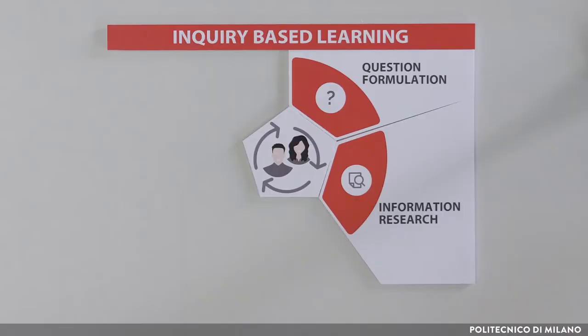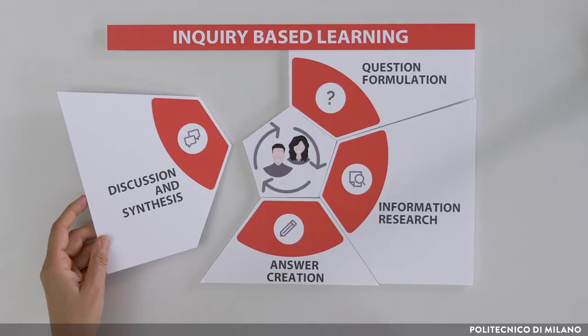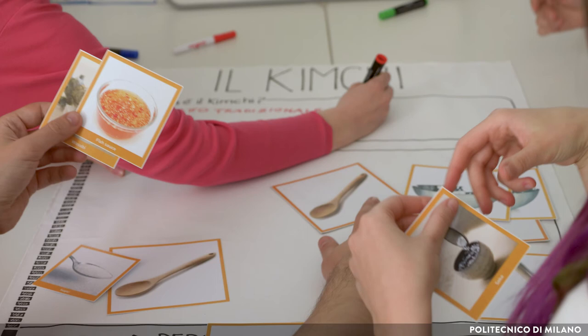Once the research phase is completed, the students must try to formulate an answer to the original question. However, as in the scientific environment, the work leading to formulating an answer is never complete if it is not discussed and confronted with others. Therefore, the teacher will encourage small groups to merge with others to compare their hypothetical answers. The discussion will then lead to a selection of answers, carried out by the students themselves, who will select the most appropriate ones and share them with the class.